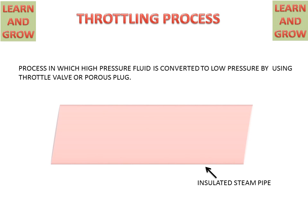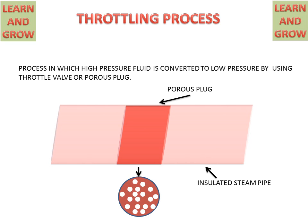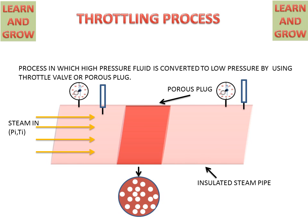We have an insulated steam pipe and a porous plug. A porous plug is a plug with many small holes — that is why it is called a porous plug. There is a pressure gauge and a thermometer attached to the inlet side and also to the outlet side. Steam enters from the left-hand side with inlet pressure and inlet temperature, and exits with outlet pressure and outlet temperature.